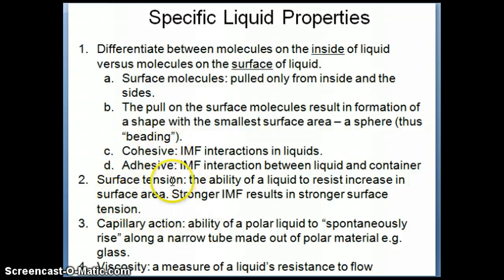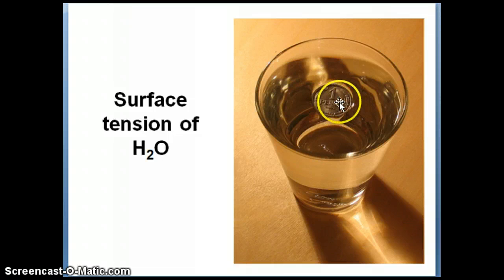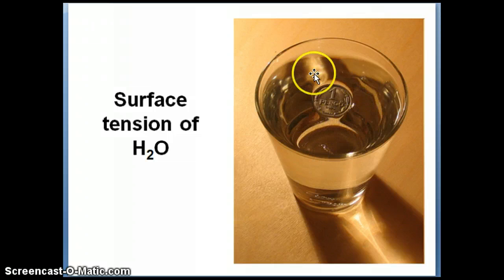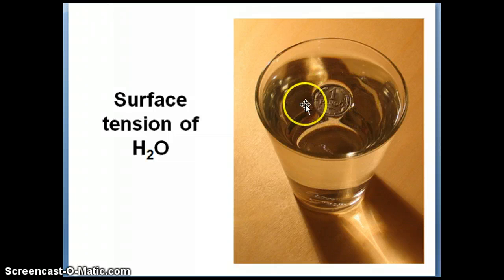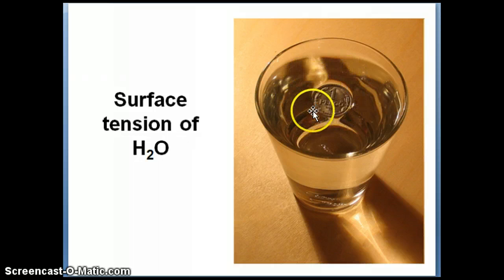Another property of liquids is surface tension. Here's a picture to illustrate it: a coin is completely suspended on water. Water's ability to make interactions with itself — the intermolecular forces holding water together — is strong enough to withstand the weight of the coin without breaking. Of course, there's a certain limit of mass before the surface tension breaks, but this is all due to intermolecular forces holding the water in such a way that they create a net able to withstand the coin's weight without it falling through.